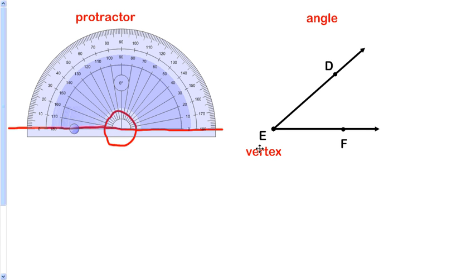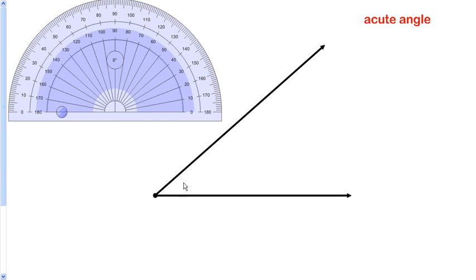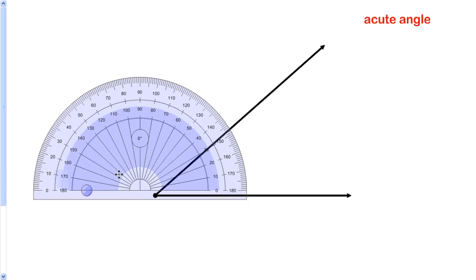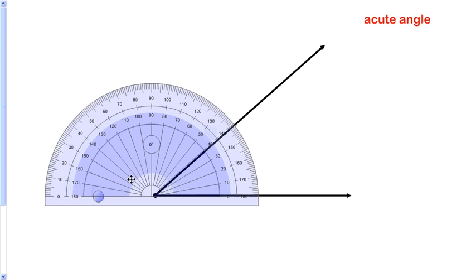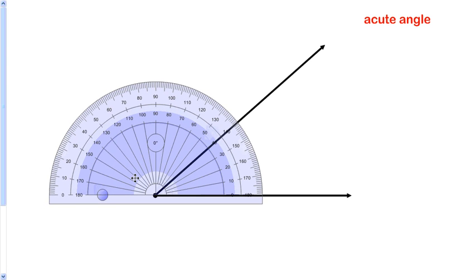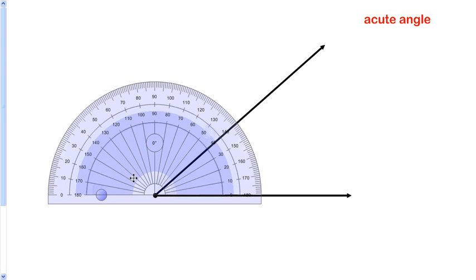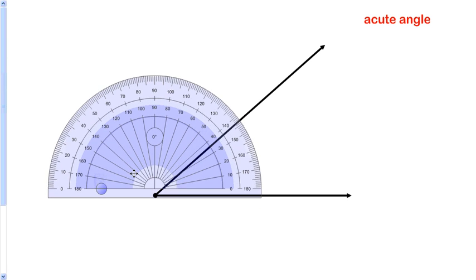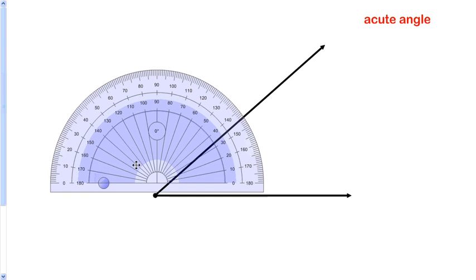For measuring angles, here's a normal acute angle. Take your protractor and bring it above the line that's horizontal. Usually one of the rays is horizontal, and line up the zero line with that ray that's on the bottom or horizontal there.